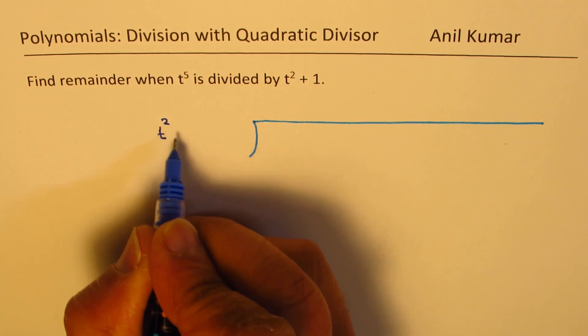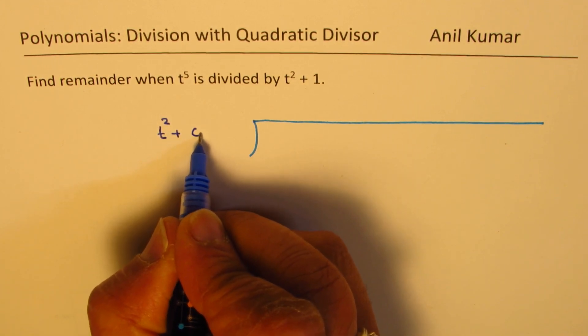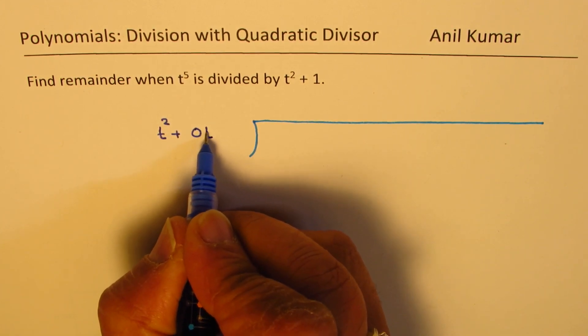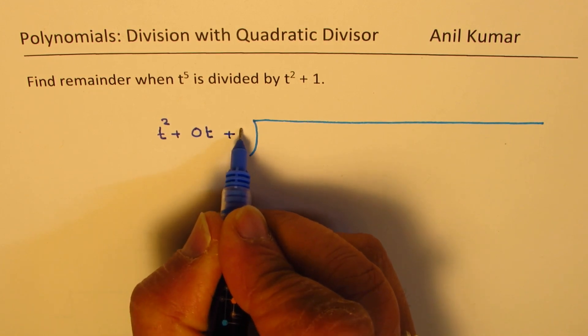So we are dividing by t squared plus a term missing here is t, so we will write 0t here and then the constant 1.